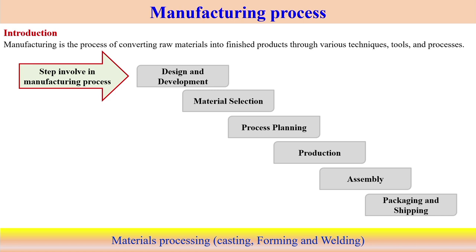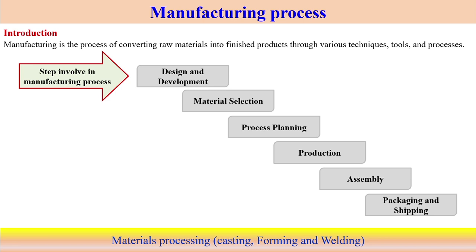We can consider what the different steps of a manufacturing process are. It starts with design and development — we start with the design of the complete process and try to develop and further improve this particular process over time. Once design and development of the process is done, we try to select the material — which material is appropriate or what kind of manufacturing process suits this particular material, so we can design the manufacturing process. Development is always a consequence of any kind of manufacturing process because over time, development always occurs. Once we select the particular material, we do process planning — how to process this material such that minimum time is required and we can save time.